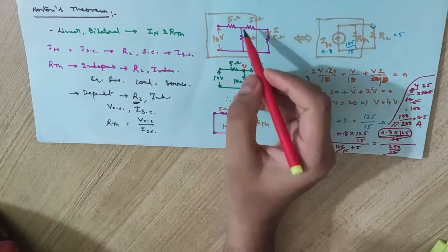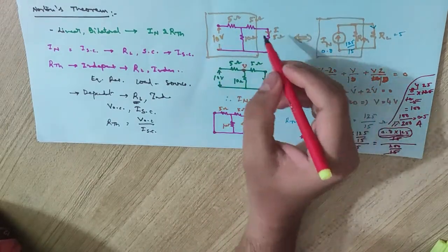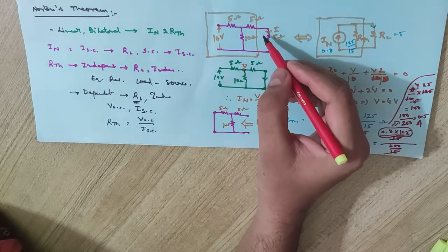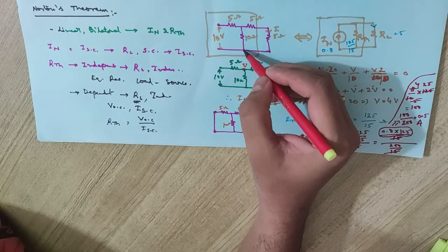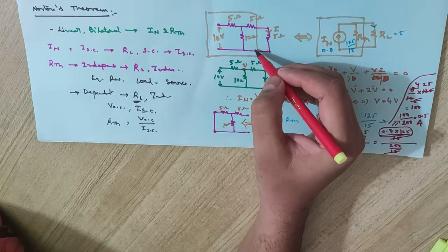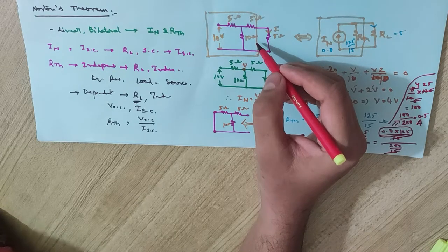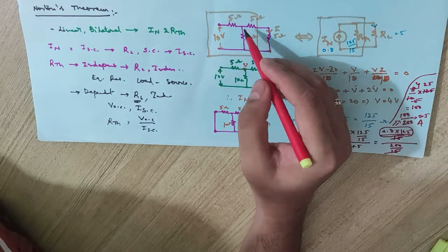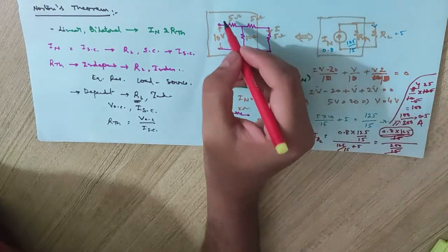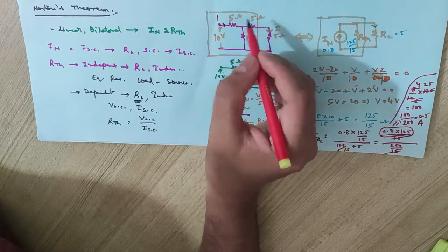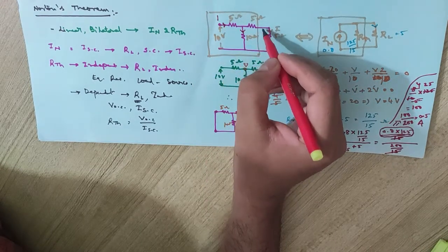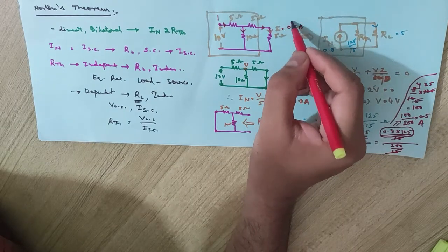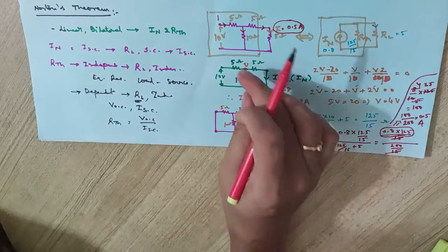This was already discussed in Thevenin's theorem using direct analysis: 5Ω and 5Ω are in series giving 10Ω, which is in parallel with the other 10Ω giving 5Ω, and that 5Ω in series with the remaining 5Ω gives a total of 10Ω. The total current is 1A, which is equally divided, so the current through the load is 0.5A — the same answer proven by Norton's theorem.